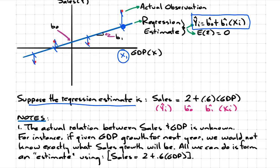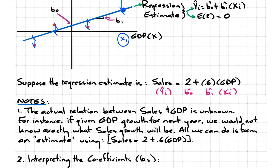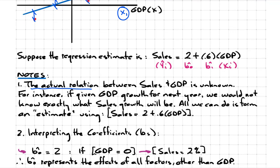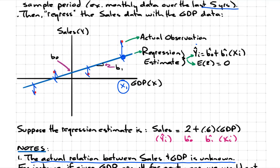What conclusions can we draw? The actual relation between sales and GDP is unknown. If you're given GDP growth for next year, we would not know exactly what sales growth will be — all we can do is form an estimate. That explains the hat: it says this is our estimate. I don't know exactly what sales will be next year, but here's my estimate based on historic observations. We use the regression equation derived from historical observations to form that estimate.